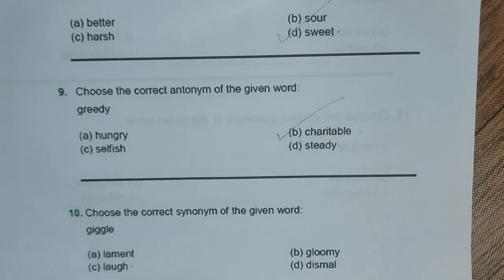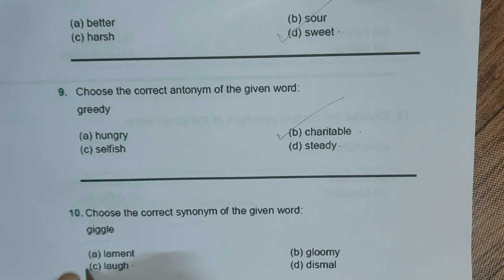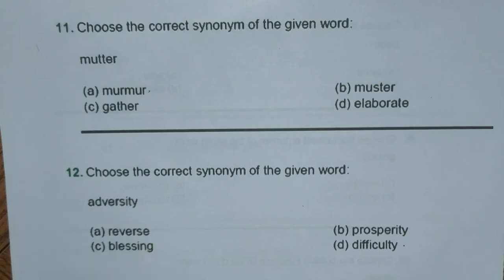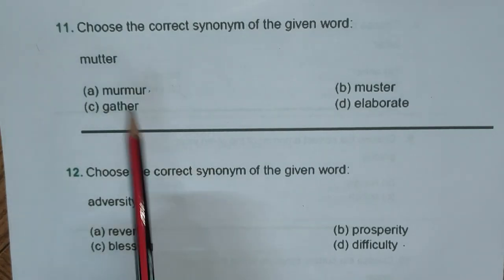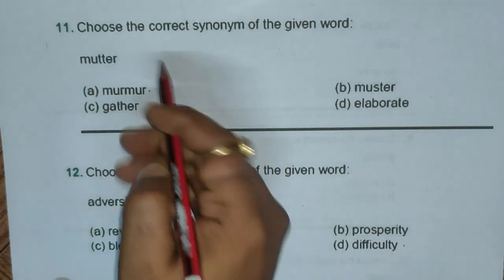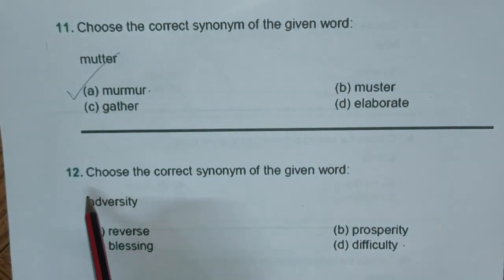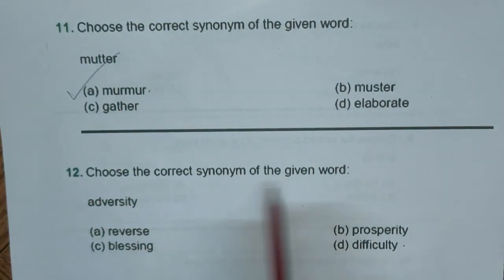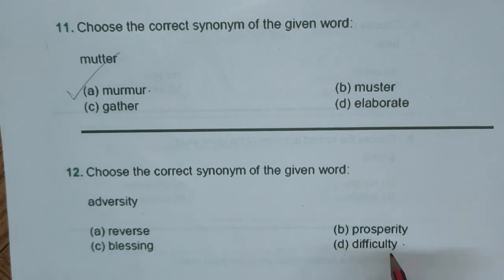Question ten: choose the correct synonym of the given word. We are looking for similar meaning — similar meaning to 'giggle' is laughing, so option C 'laugh' is the right answer. Question eleven: the correct synonym of 'murmur' is option with 'murmur,' so that option is the right answer. Question twelve: the synonym of 'adversity' is 'difficulty,' so option D is the right answer among A, B, C, D.